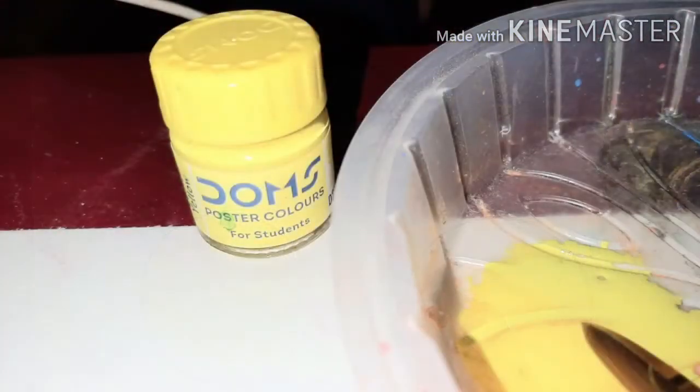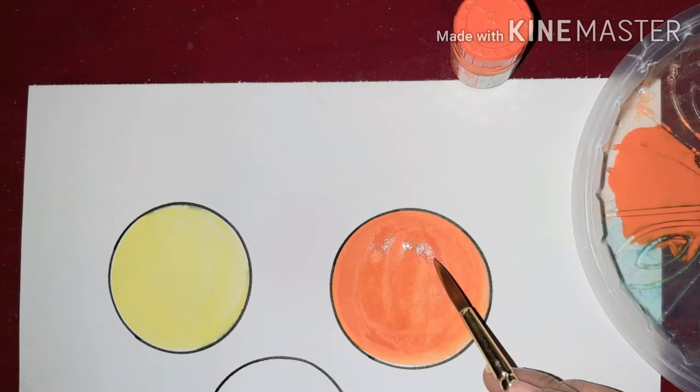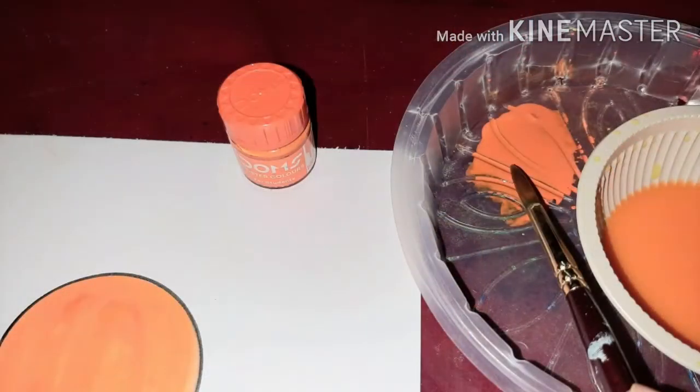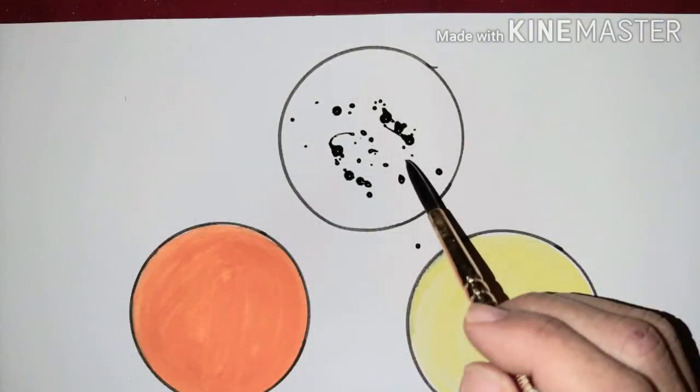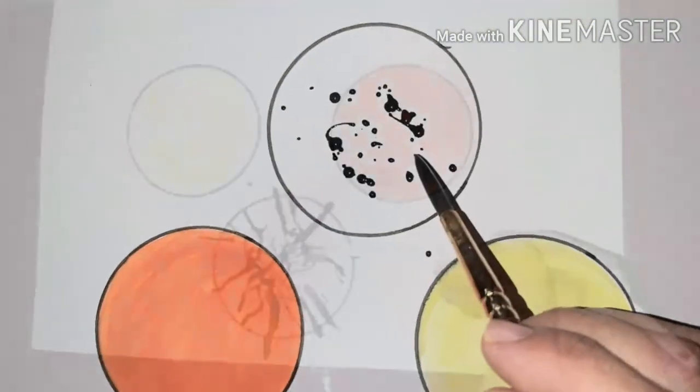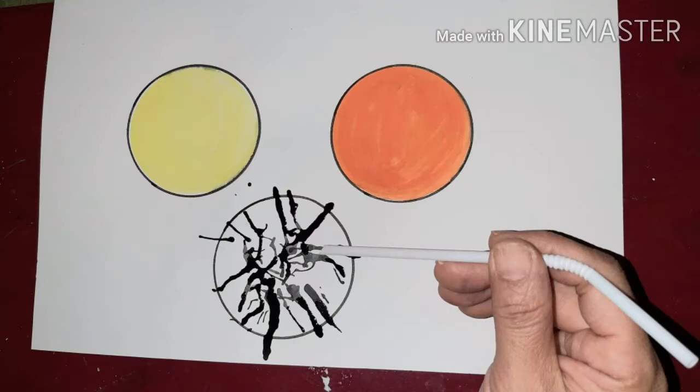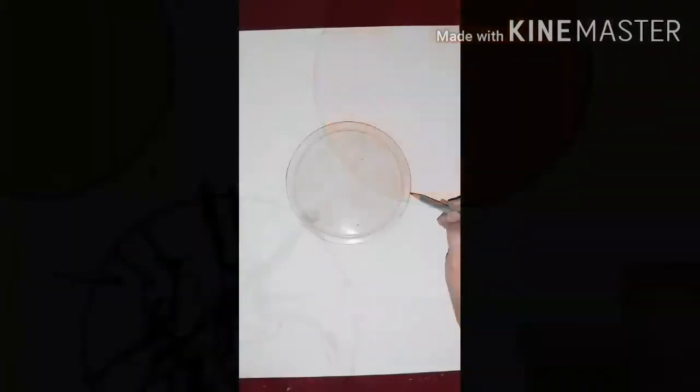Similarly, orange color to be painted in the second circle using the same method. Inside the third circle, watery black paint to be sprinkled in it and blowing off this paint to be done with a straw.